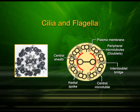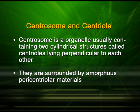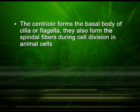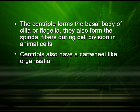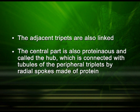The centrosome is an organelle usually containing two cylindrical structures called centrioles, which lie perpendicular to each other, surrounded by amorphous pericentriolar material. The centriole forms the basal body of cilia or flagella, and also forms spindle fibers during cell division in animal cells. Centrioles have a cartwheel-like organization, made up of 9 peripheral fibrils of tubulin — the 9+0 arrangement. Each peripheral fibril is a triplet, with adjacent triplets linked. The central part is proteinaceous and called the hub, connected to the peripheral triplets by radial spokes made of protein.